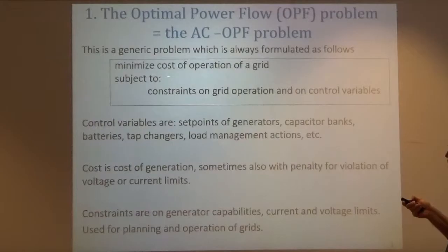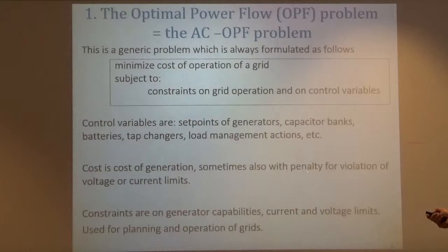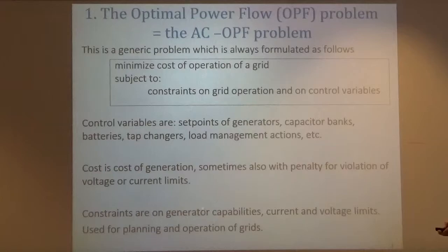The cost of the grid is, of course, the cost of generation. If you have fuel-based generation — for example, if you run a diesel generator — then the cost of generation has a component which is proportional to the amount of fuel that you pay. We may also want to add penalty for violation of voltage or current limits. We can put that as penalty in the cost or in the constraints. Typical constraints are the maximum capabilities of all the hardware that we have.